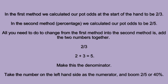Now on to the simple trick which you can use to transfer from one method to the other. In the first method, we calculated our pot odds at the start of the hand to be 2 to 3. In the second method, the percentage, we calculated our pot odds to be 2 to 5. All you need to do to change from the first method into the second method is add the two numbers together. So you take the 2, add it to the 3 and get 5. Make this number the denominator — the number on the bottom of the fraction. Take the number on the left hand side as the numerator, and boom — 2 over 5, or 40%.